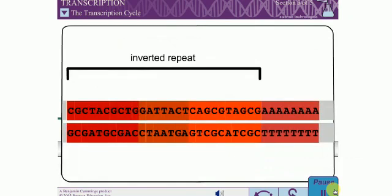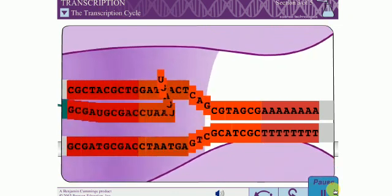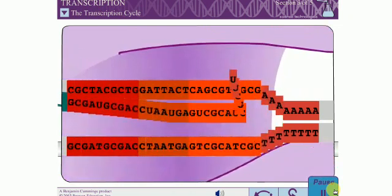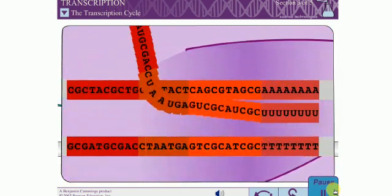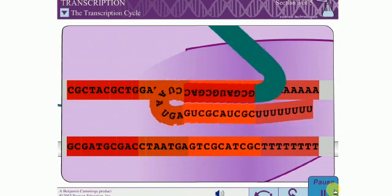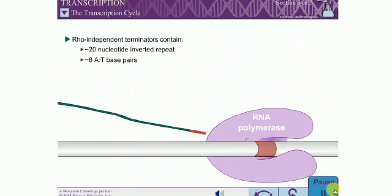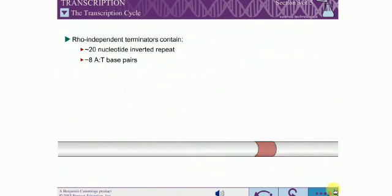Rho-independent terminators, also called intrinsic terminators, consist of two sequence elements: a short inverted repeat of about 20 nucleotides, and a stretch of about 8 AT base pairs. The RNA that results from the inverted repeat sequence is able to base pair with itself and forms a hairpin structure. The hairpin then disrupts the elongation complex. AU base pairs are the weakest of all base pairs, allowing the RNA to easily dissociate from the DNA.